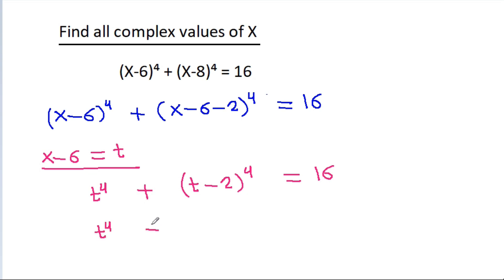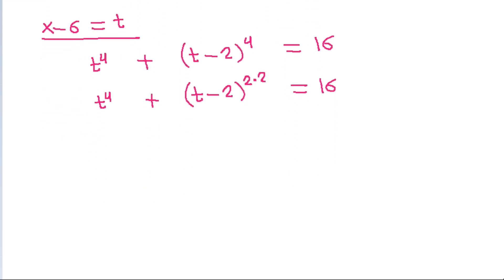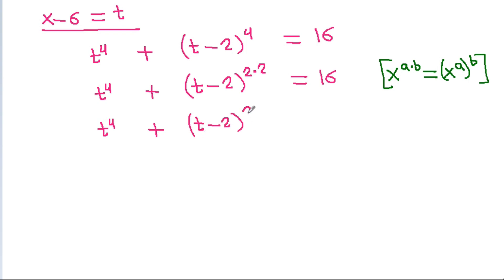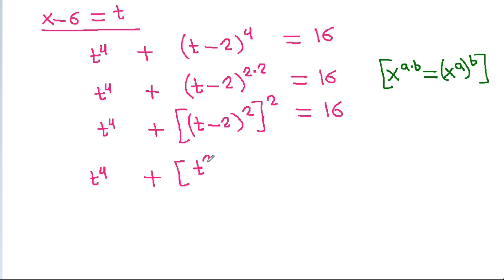We note that (t-2)⁴ can be written as ((t-2)²)². Expanding (t-2)² gives t² - 4t + 4, so the equation becomes t⁴ + (t² - 4t + 4)² = 16.